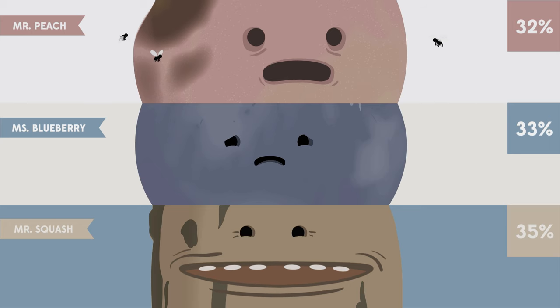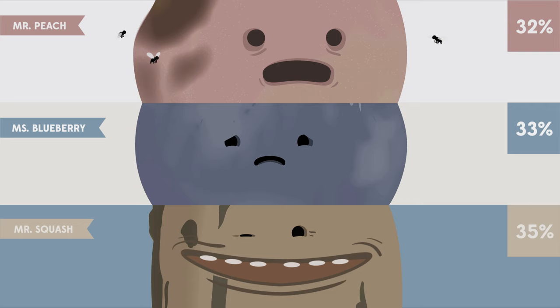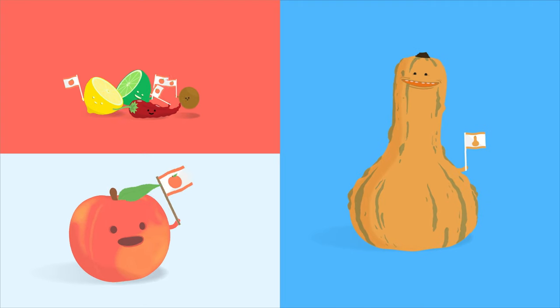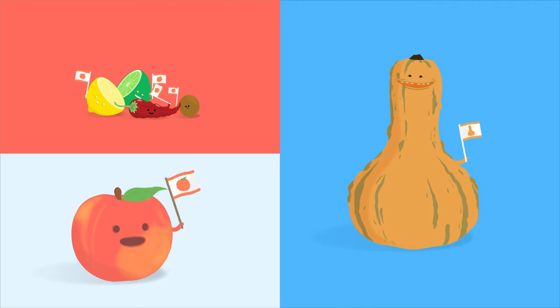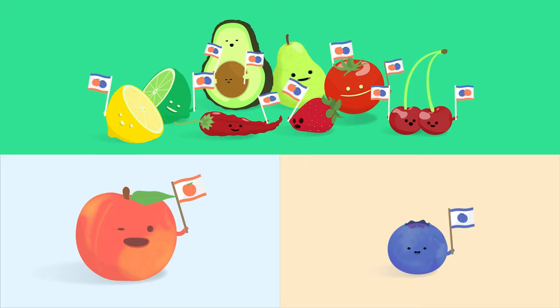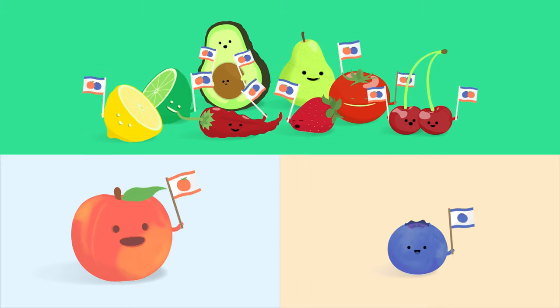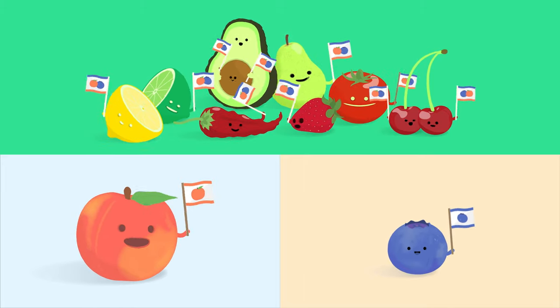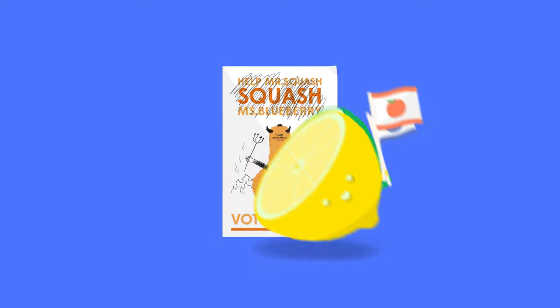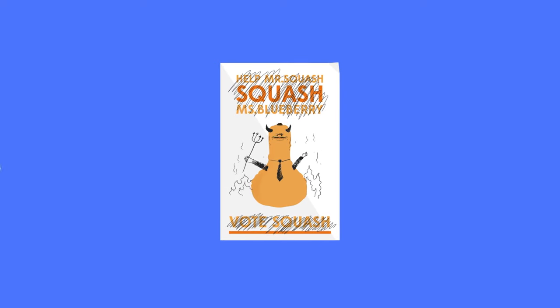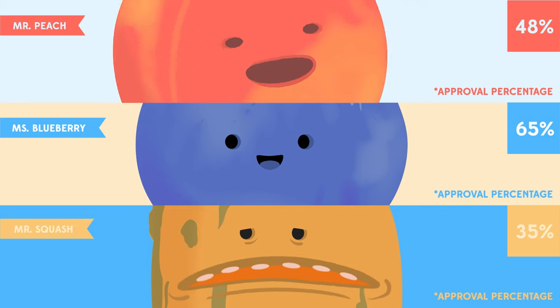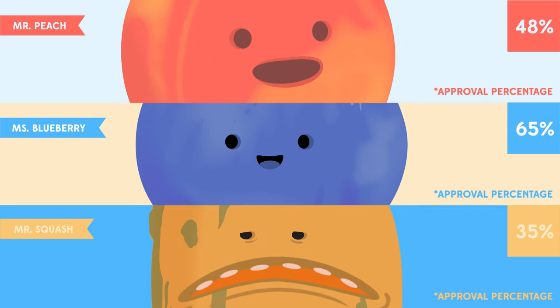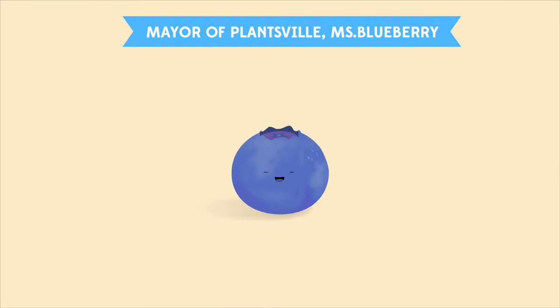With approval voting, the election would have gone quite differently. Peach's supporters no longer fear that a vote for Peach will help elect Squash. Instead, they show their sincere support for Peach and also Blueberry. They want to prevent Mr. Squash from winning, and they do. Approval voting accurately reflects Peach's support. Mayor Blueberry wins the election. Democracy is restored!